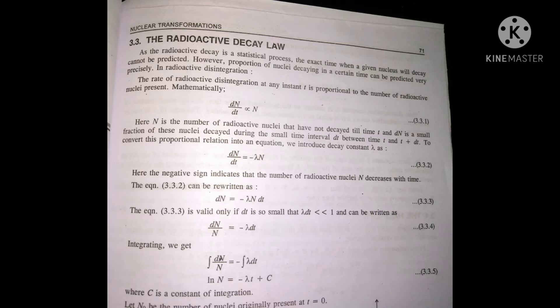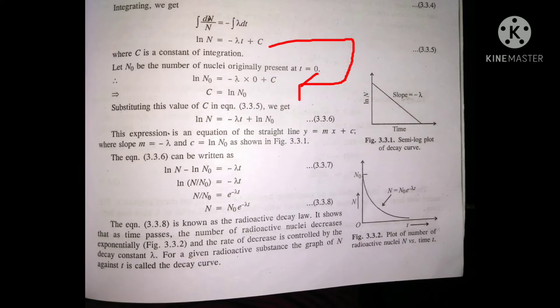Next, we want to find the constant of integration. For that we apply the initial condition: when t = 0, let N₀ be the number of nuclei. Substituting: log N₀ = −λ × 0 + C, so C = log N₀.